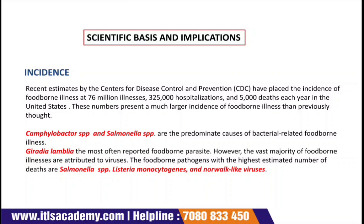The vast majority of foodborne illnesses are attributed to different types of viruses. The foodborne pathogens with the highest estimated numbers of deaths are Salmonella species, Campylobacter species, and Norwalk-like viruses. These are the most threatening pathogens that can cause foodborne illness in humans, who are at major risk from foodborne diseases.